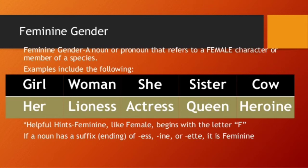Actress, heroine — whenever we use these suffixes ending in '-ess,' '-ine,' or '-ette,' the word represents feminine gender. So lioness, actress, queen, and heroine are all representing the feminine gender.